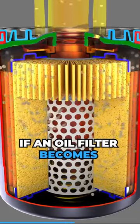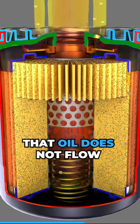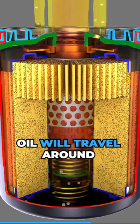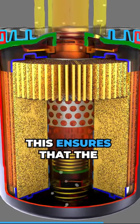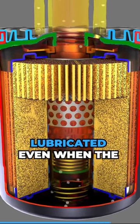If an oil filter becomes plugged to the point that oil does not flow quickly enough, oil will travel around the filter element through the bypass valve. This ensures that the engine will be lubricated even when the filter is plugged.